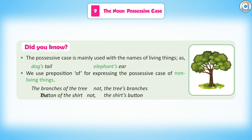Did you know? The possessive case is mainly used with the names of living things, such as dog's tail and elephant's ear. We use the preposition 'of' for expressing the possessive case of non-living things — for example, the branches of the tree, not the tree's branches; the button of the shirt, not the shirt's button.